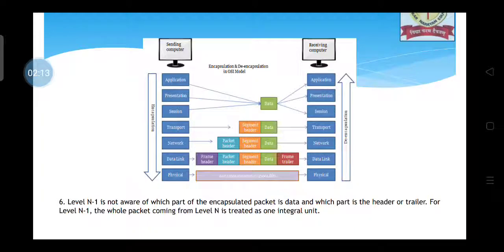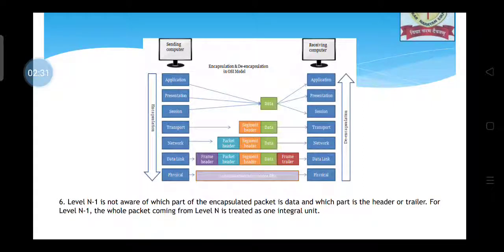The 7 layers can be remembered with the mnemonic P, D, N, T, S, P, A — where P stands for physical, D for data link, N for network, T for transport, S for session, P for presentation, and A for application. At the sender side, encapsulation takes place, and at the receiver side, decapsulation takes place. The packet starts from the application layer and is passed down to presentation, then session, then transport, and so on.